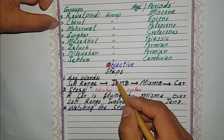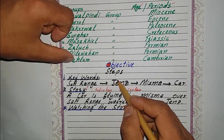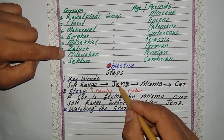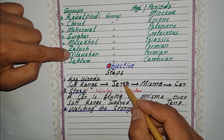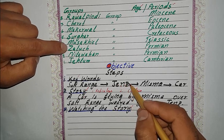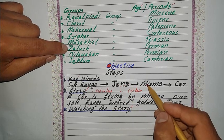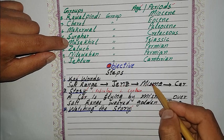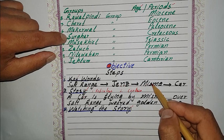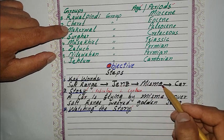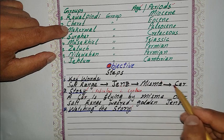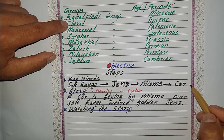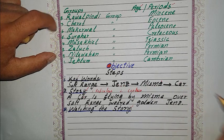J stands for Jhelum group. N stands for Nilawahan group. Z stands for Zaluj group. M stands for Musakhel group. S stands for Surgar group. M stands for Makarwal group. C stands for Chirad group. R stands for Rawalpindi group.